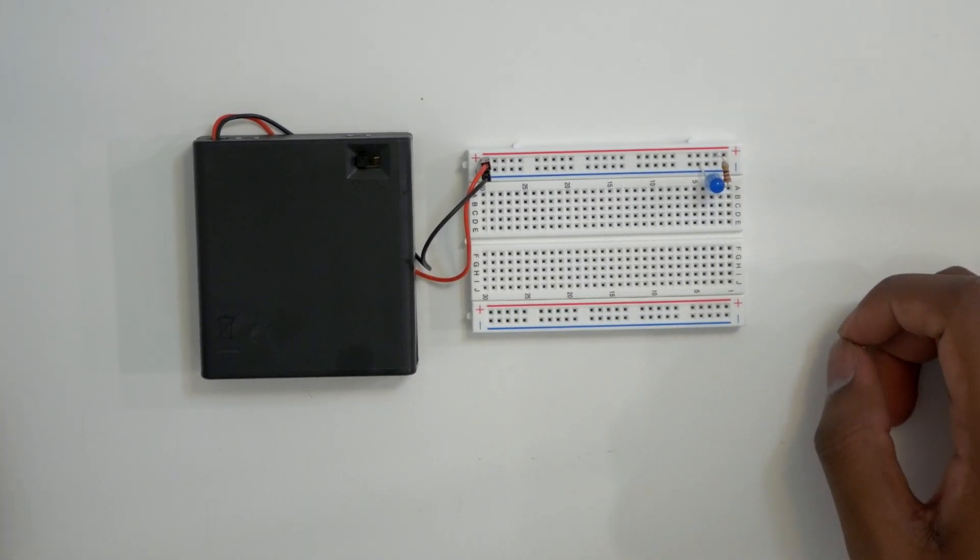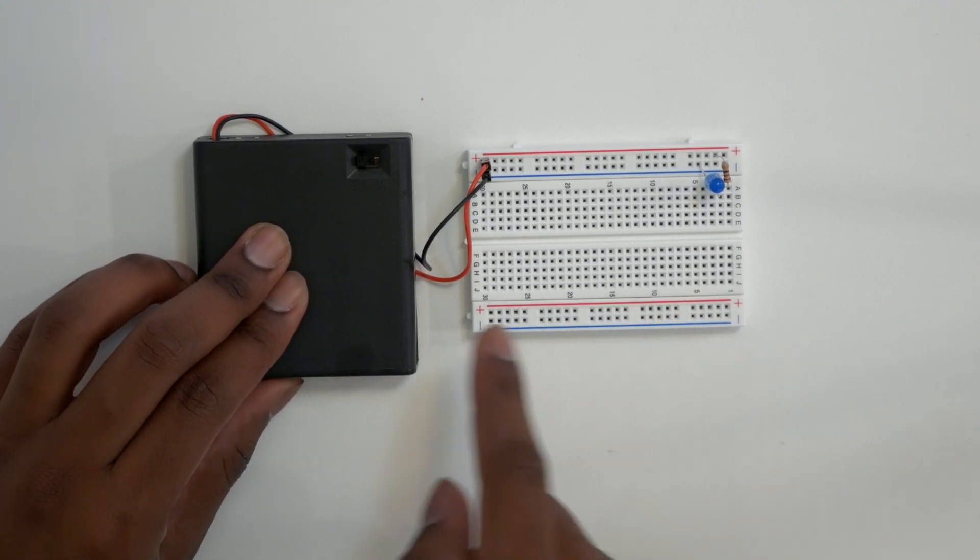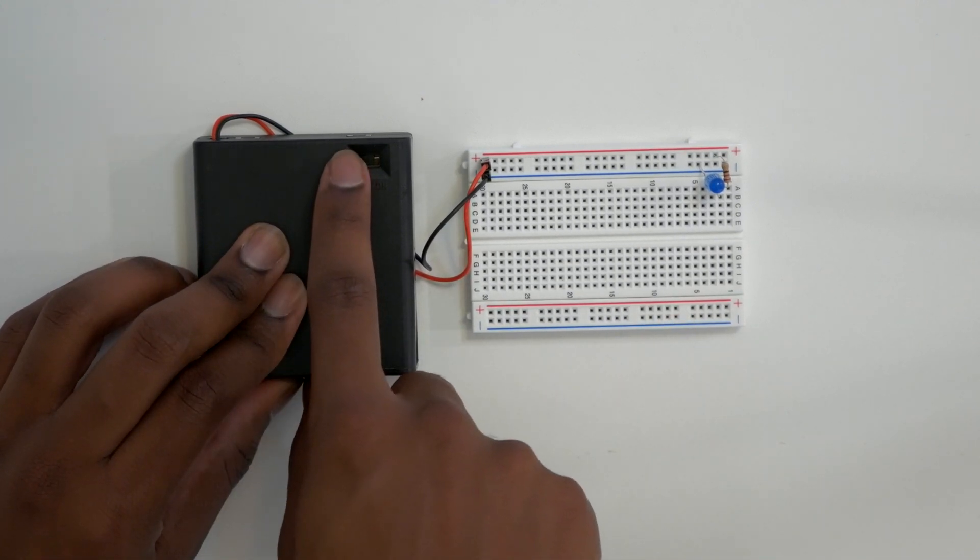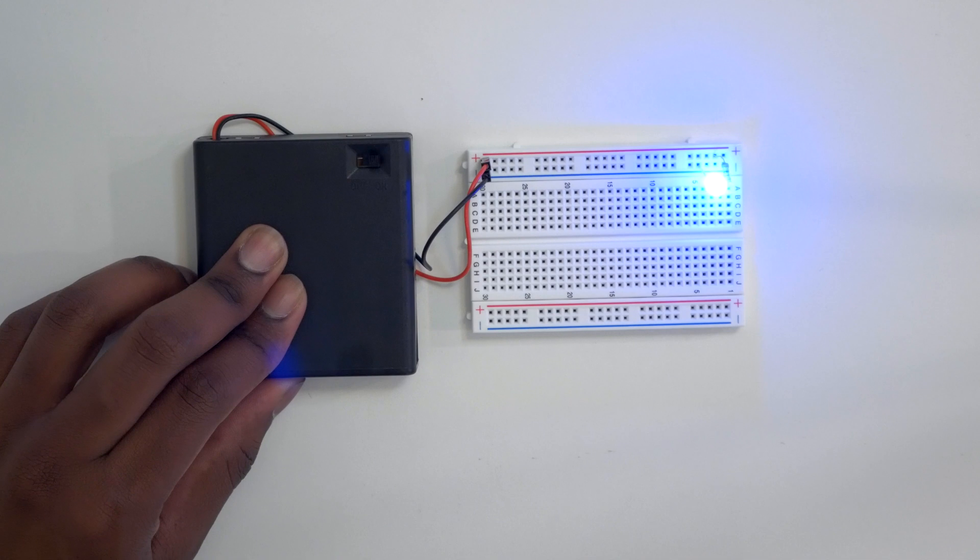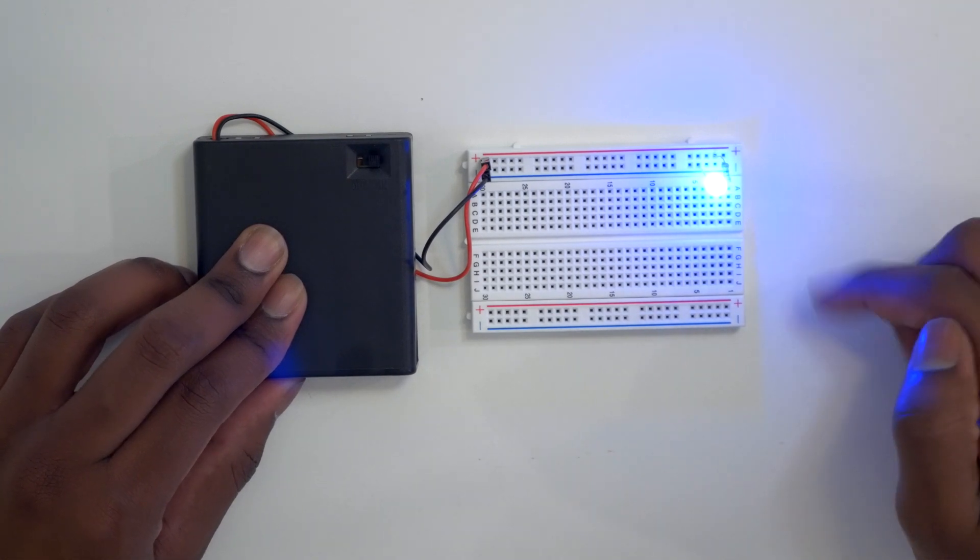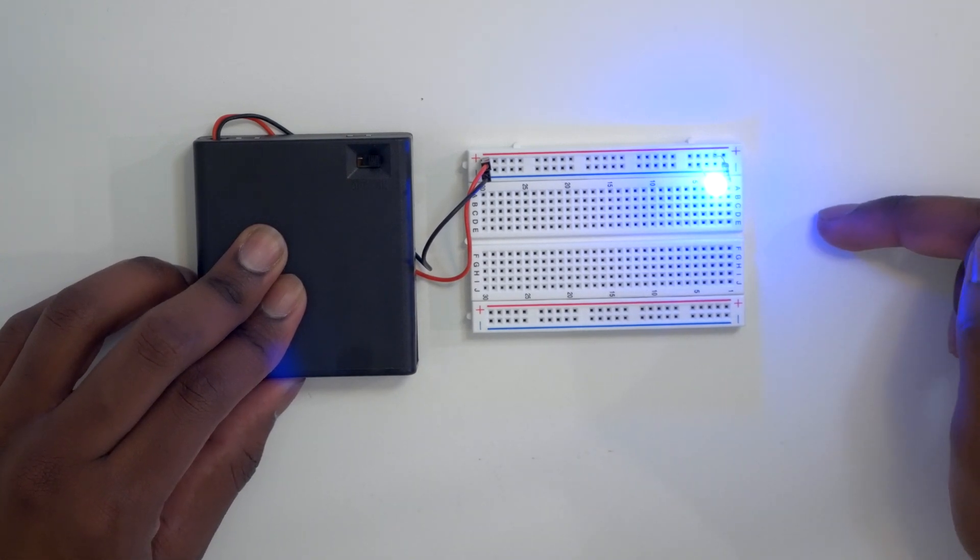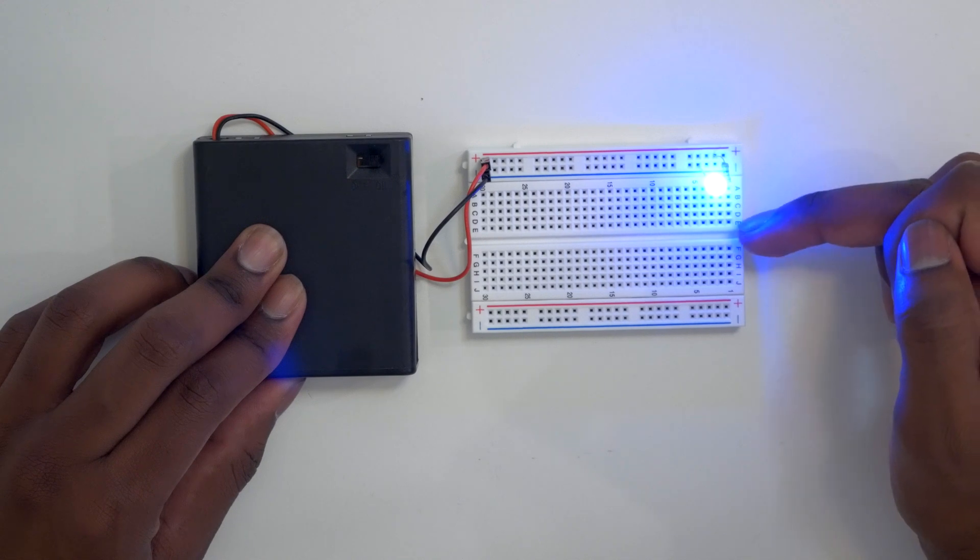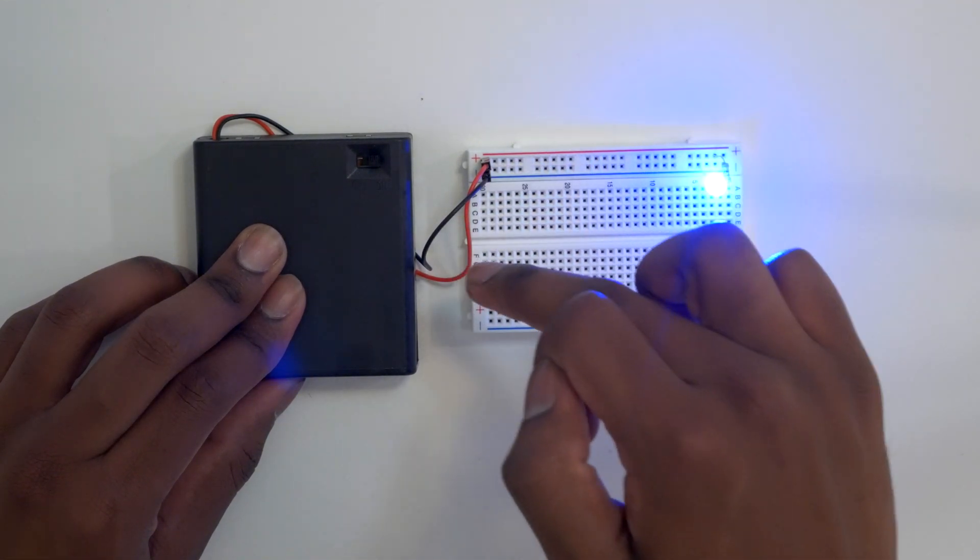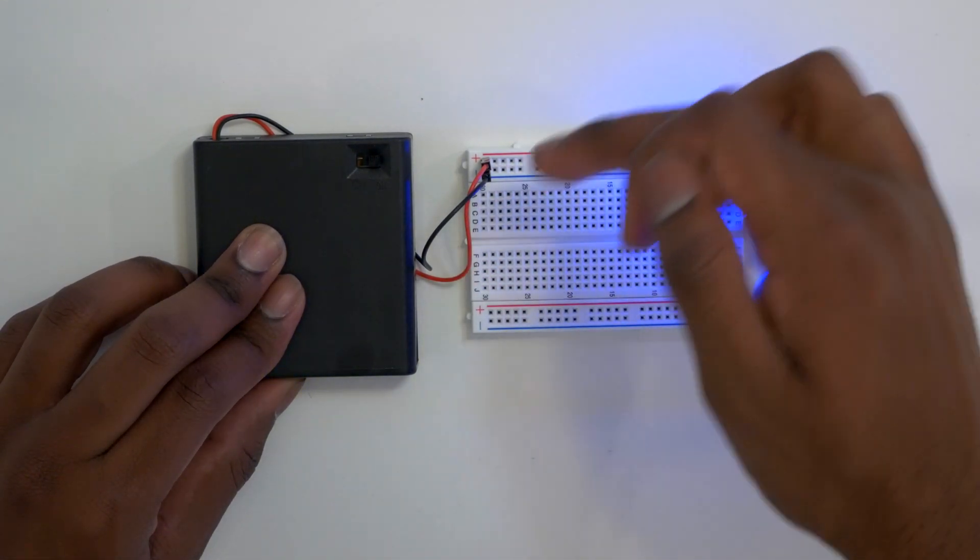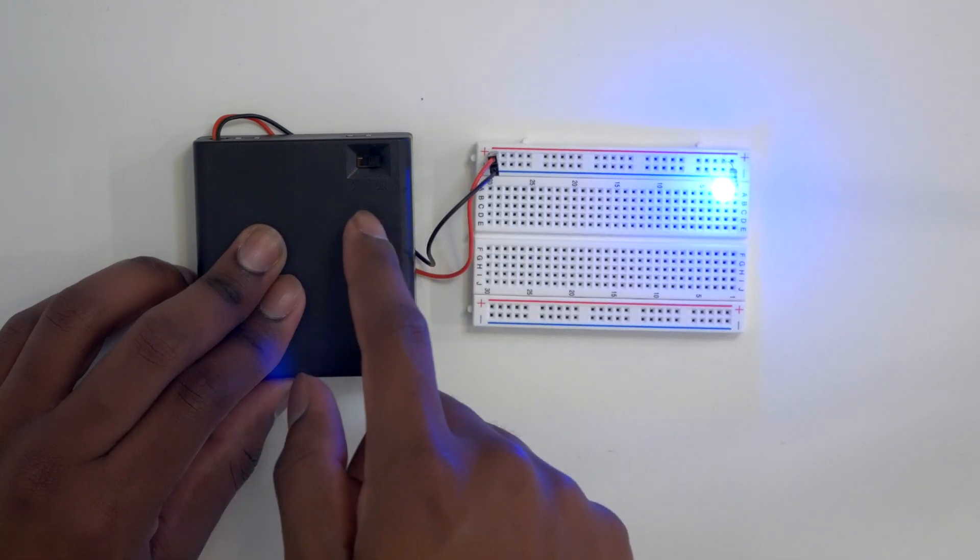And if everything is hooked up correctly, when we flip this switch, we should see the LED turn on. So we can go ahead and give that a try. And there you go, our LED turns on. So I hope if you've been following along at home, you're seeing the same result. Otherwise, make sure you're connected to the same column here on your breadboard. Make sure you have the wiring right for your battery pack, and from your resistor to your LED.